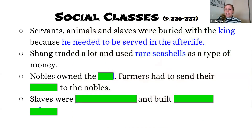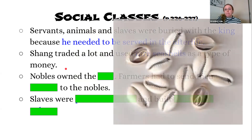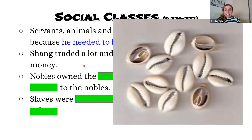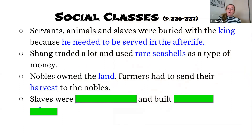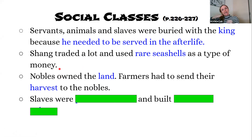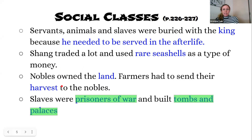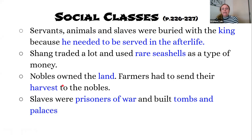The Shang also traded a lot and used rare seashells as a type of money — they did not have minted coins yet, which came about a little bit later. The nobles owned all of the land, and the farmers who worked on the land had to send a portion of their harvest to the nobles. This meant nobles stayed in the upper class while farmers stayed in the lower class. Slaves were typically prisoners of war and had many jobs, including building the tombs and palaces for the king.